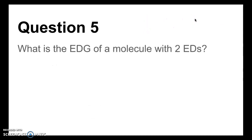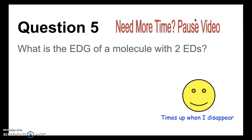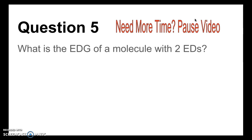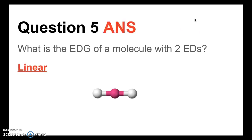Let's move on to question 5: What is the electron domain geometry of a molecule with two electron domains? The answer is linear, of course. Here you can clearly see in the structure that when you have two electron domains, the electron domains will arrange themselves in a linear fashion. Remember, that's because electron domains want to be as far apart as possible.